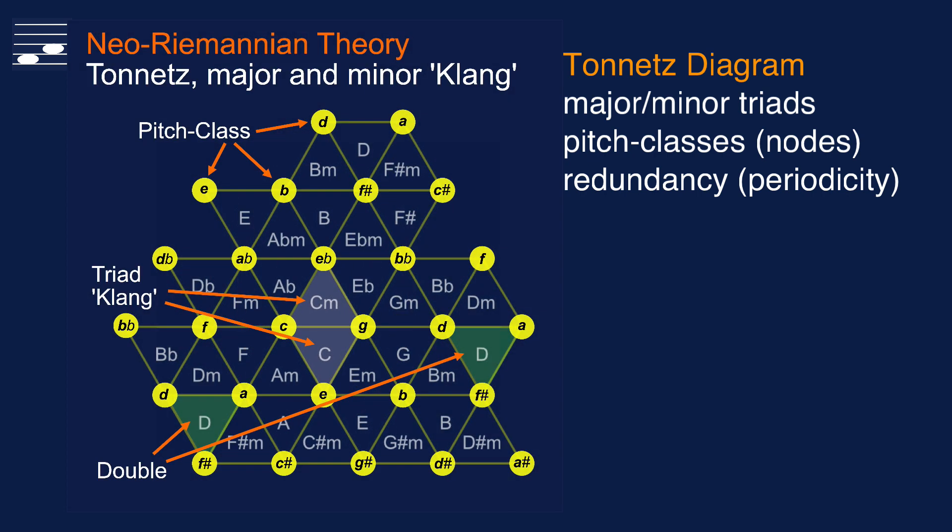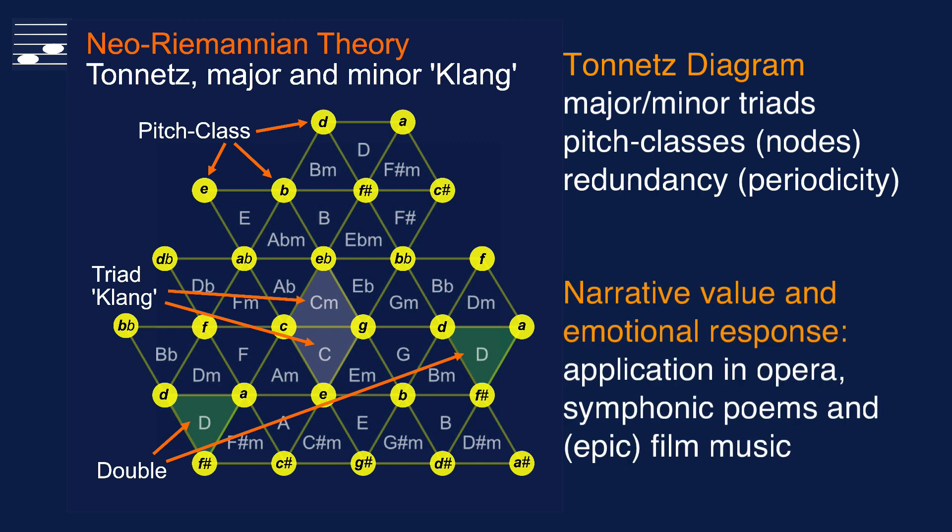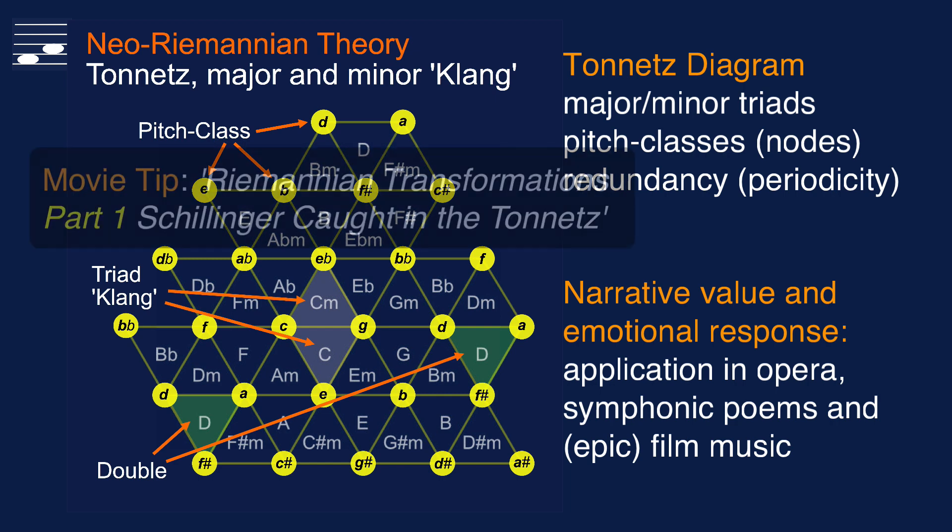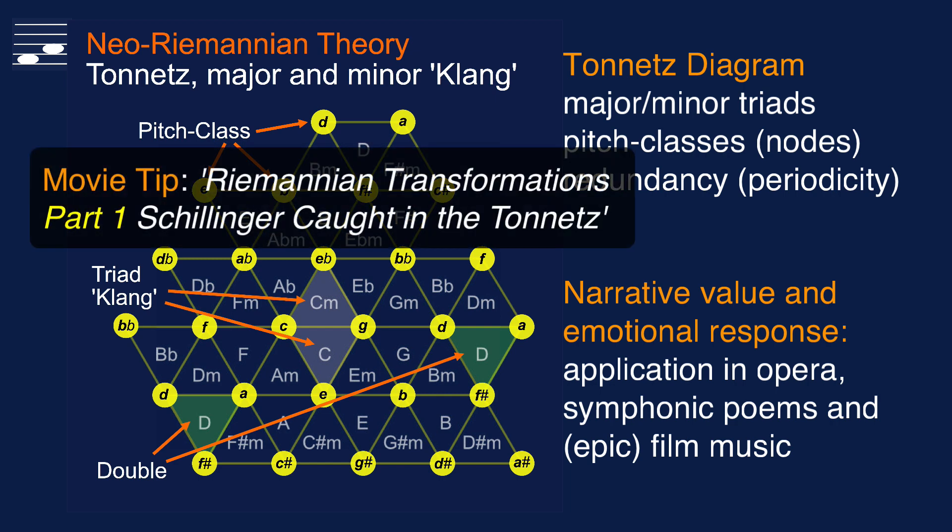Due to periodicity there is redundancy, meaning that you'll see multiple occurrences of any triad. When chord progressions move through the Tornetz, a narrative value and emotional response will emerge, a fact that is used in opera, symphonic poems and epic film music.